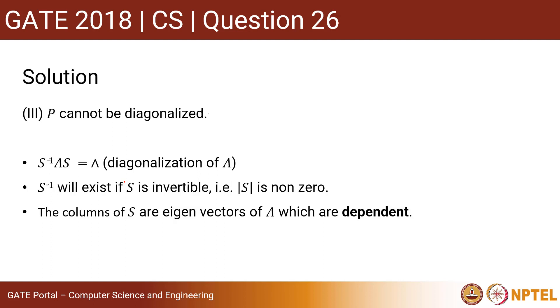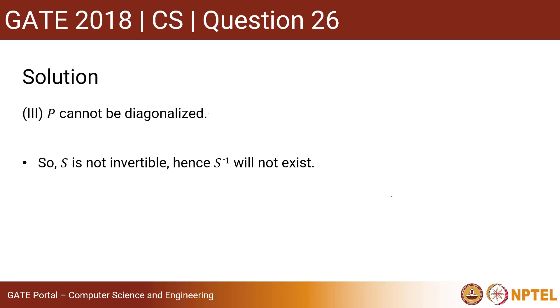The columns of S are eigenvectors of A which are dependent as per the question. Since the columns of S are dependent, then the determinant of S will be 0. That is, S is not invertible. Hence, A is not diagonalizable. So this statement is also true.